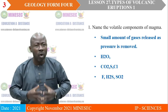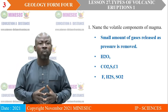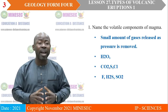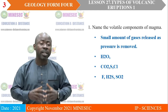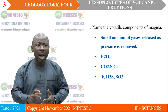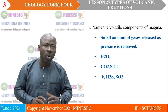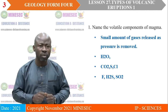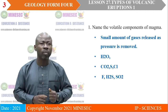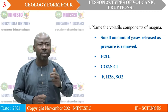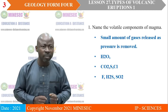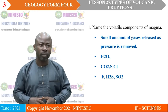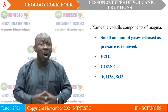If you did the assignment correctly, then your answer is supposed to read as follows. Name the volatile components of magma. The volatile components of magma simply refer to the small amount of gases released as pressure is removed. And these include water vapor, carbon dioxide gas, sulfur gas, chlorine, fluorine, hydrogen sulfide, and sulfur dioxide. Those are the volatile components of magma.